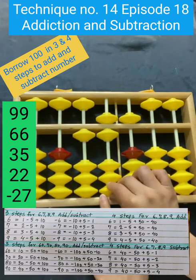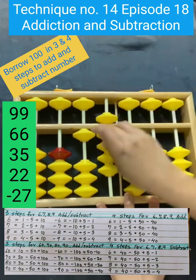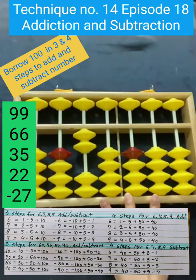35, this is 30, and for 5, you have to add from this 100. So first reduce 5, reduce 90, and borrow this 100.